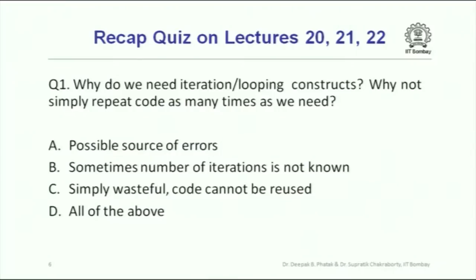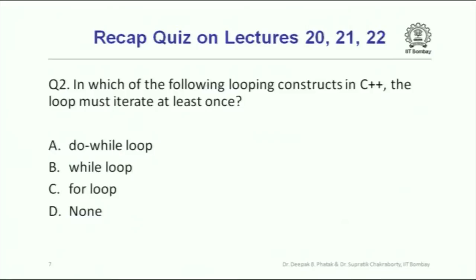Here is the first question. If you have seen the video lectures, this has been discussed in detail. The question asks: why not simply repeat code as many times as we need? Why do we need iteration constructs in a programming language at all? There are four possibilities; you could indicate more than one. Please write down the question number and your answer. The second question: in which of the following constructs must the loop iterate at least once?